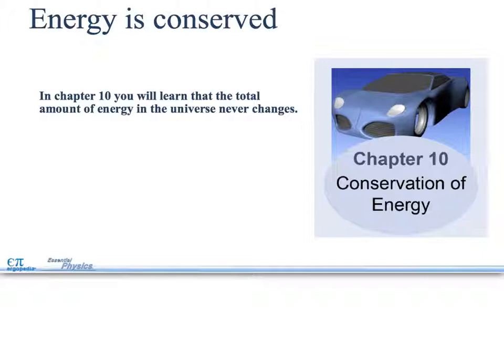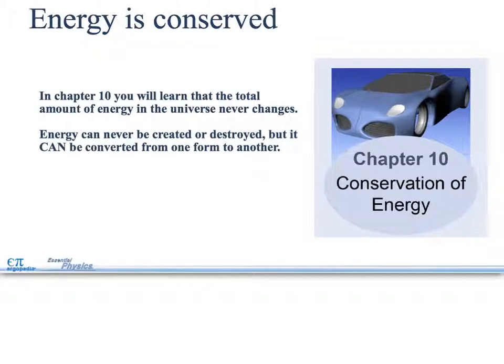Energy is conserved in chapter 10, which may be the key chapter to all of the first half of this book: conservation of energy. Conservation of energy is everywhere. It is a law and everything has to apply to it. Whatever energy you start with has to equal the energy you end with. You will learn that the total amount of energy in the universe never changes. Whatever was here in the beginning is still here now and forever will be. Energy can never be created or destroyed, but it can be converted from one form to another. That's the key concept of physics and that's what we're going to follow through this entire class.